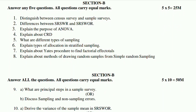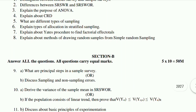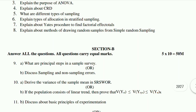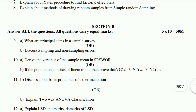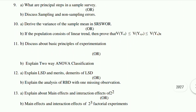Essay questions: Ninth A, what are the principal steps in a sample survey? Ninth B, discuss sampling and non-sampling errors. Tenth A, derive the variance of the sample mean in SRSWOR. Tenth B, if the population consists of a linear trend, prove that V(Ȳ_ST) ≤ V(Ȳ_SYS) ≤ V(Ȳ_NR). Eleventh A, discuss the basic principles of experimentation. Eleventh B, explain two-way ANOVA classification. Twelfth A, explain merits and demerits of LSD. Twelfth B, explain the analysis of RBD with one missing observation. Thirteenth A, explain main effects and interaction effects of 2² factorial experiments. Thirteenth B, main effects and interaction effects of 2³ factorial experiments. This is Course 4 syllabus and model paper.